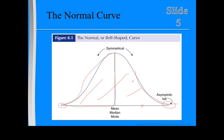Those values below the mean are equally distributed as the values above the mean. The mean, the median, and the mode are all identical, and are so represented by the vertical line.